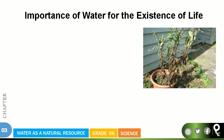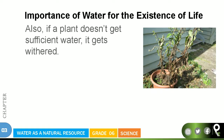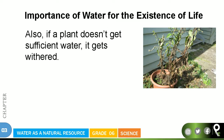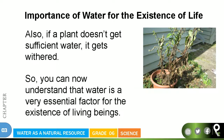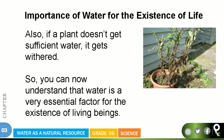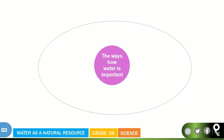Look at that plant — if a plant doesn't get sufficient water, it gets weathered. You can now understand that water is a very essential factor for the existence of living beings: animals, plants, humans — everything requires water. Now let's understand the ways in which water is important.